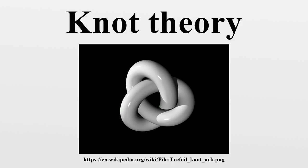In 1927, working with this diagrammatic form of knots, J. W. Alexander and G. B. Briggs, and independently Kurt Reidemeister, demonstrated that two knot diagrams belonging to the same knot can be related by a sequence of three kinds of moves on the diagram. These operations, now called the Reidemeister moves, are: twist and untwist in either direction; move one strand completely over another; and move a strand completely over or under a crossing.